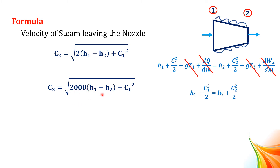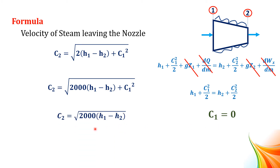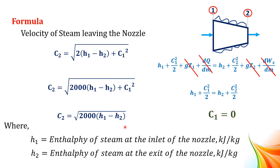We multiply (H1 minus H2) by 1000 because steam table values give specific enthalpies in kilojoules per kilogram. To convert to joules per kilogram, we multiply by 1000. In our problem, C1 is negligible, so the equation reduces to C2 equal to square root of 2000 into (H1 minus H2), where H1 and H2 are in kilojoules per kilogram.